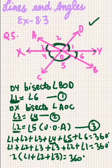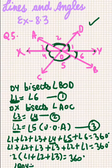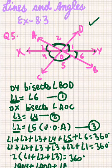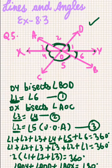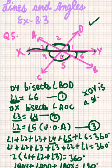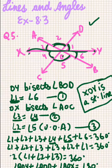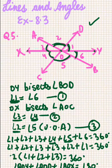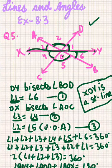Dividing both sides by 2 gives angle 1 plus angle 2 plus angle 3 equals 180 degrees. In original terms, this is angle DOY plus angle AOD plus angle AOX equals 180 degrees. These are angles on a straight line, so XOY becomes a straight line. We have proved that the bisectors of a pair of vertically opposite angles are in the same straight line. I hope you are clear. Any doubts, please comment below.